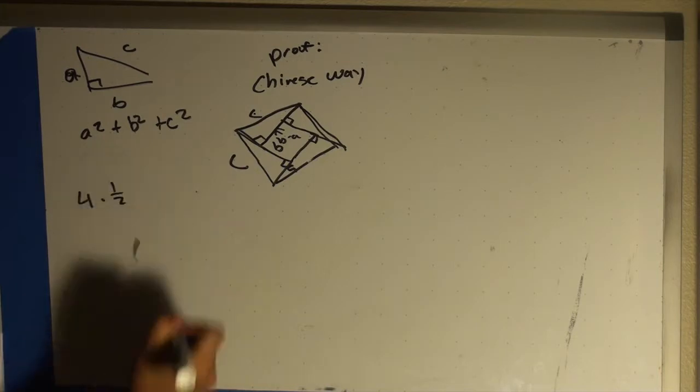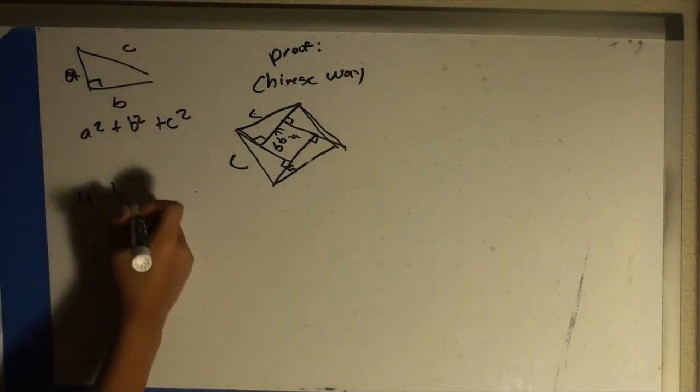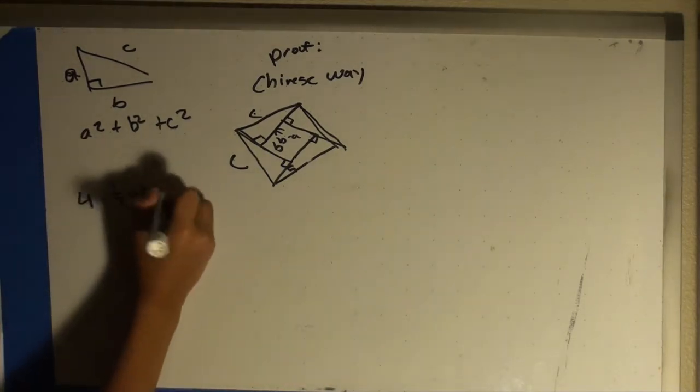The four right triangles added together plus the smaller square equals c squared, which is the area of the bigger square.